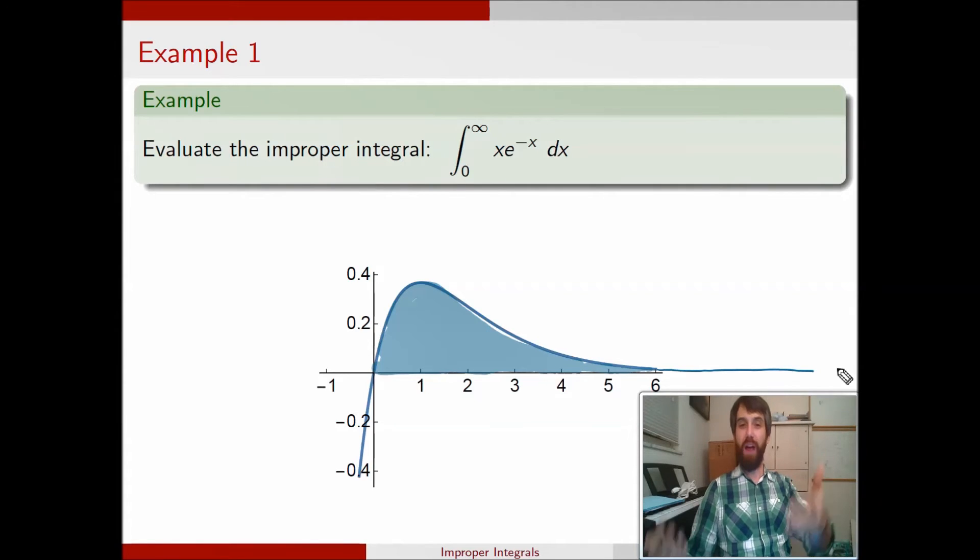Now you might wonder, is this area under this curve a finite number, or is it an infinite number? And we actually won't know until we do the calculation. The argument that it would be an infinite number is that it goes on forever, it's continually adding stuff. But the argument that it's a finite number would be, well yes, you're going on forever, but you're adding smaller and smaller amounts so that they add up to some finite thing.